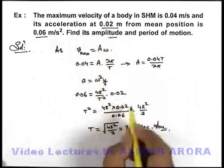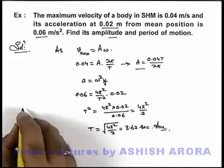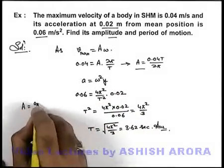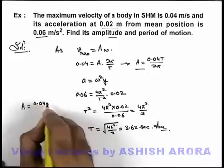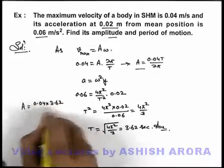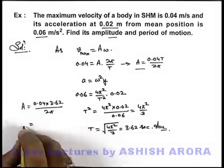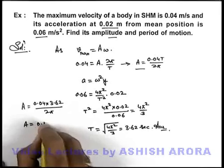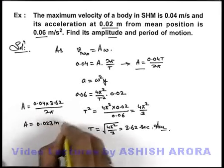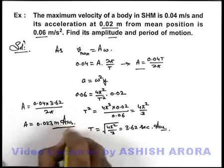And to calculate the amplitude of oscillation from this expression we can get amplitude at 0.04 multiplied by 3.62 divided by 2π. On substituting the value of π and simplifying we'll get amplitude to be 0.023 meter. This is another answer to this problem.